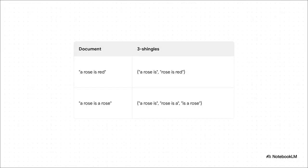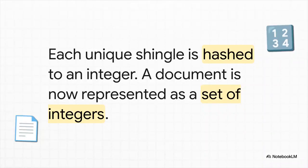So for example, the simple sentence 'a rose is red' would become a set of two three-word shingles: 'a rose is' and 'rose is red'. And by doing this, we're capturing the local word order and structure, which is absolutely crucial for figuring out how similar two documents actually are. Then each of those unique shingles gets assigned a number. And just like that, we've taken messy unstructured text and turned it into these nice, clean sets of integers. This is a huge step because now we finally have something a computer can work with and compare mathematically.